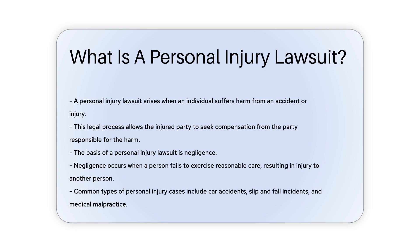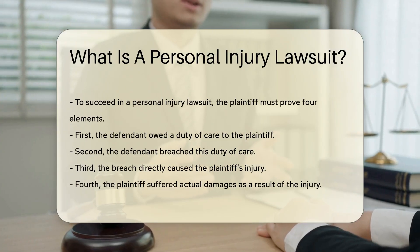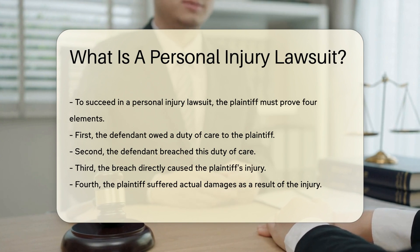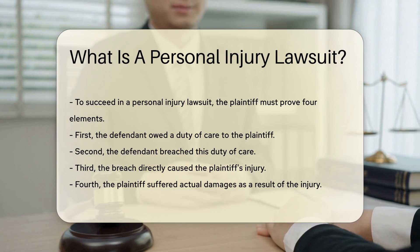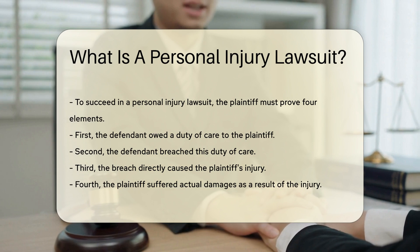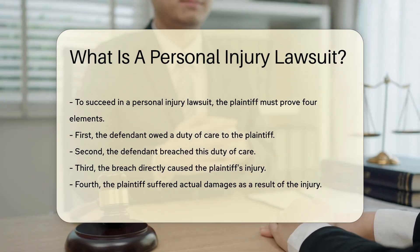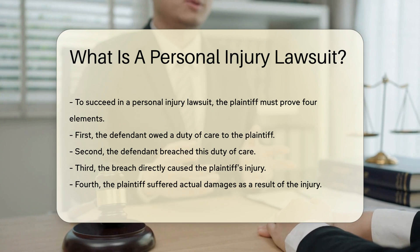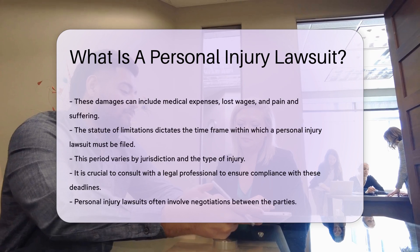Common types of personal injury cases include car accidents, slip-and-fall incidents, and medical malpractice. To succeed in a personal injury lawsuit, the plaintiff must prove four elements. First, the defendant owed a duty of care to the plaintiff. Second, the defendant breached this duty of care. Third, the breach directly caused the plaintiff's injury. Fourth, the plaintiff suffered actual damages as a result of the injury. These damages can include medical expenses, lost wages, and pain and suffering.